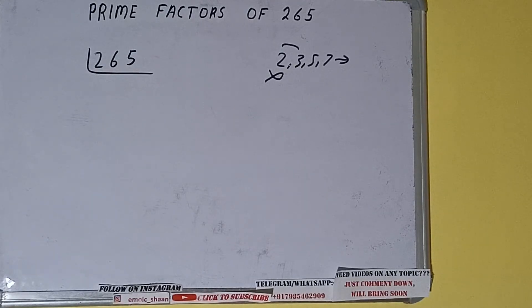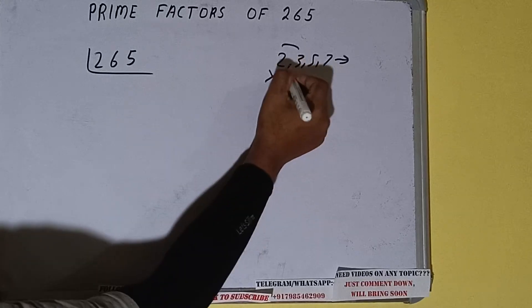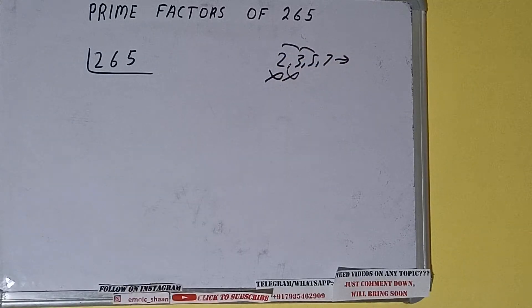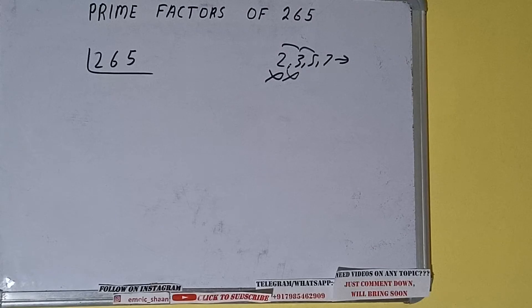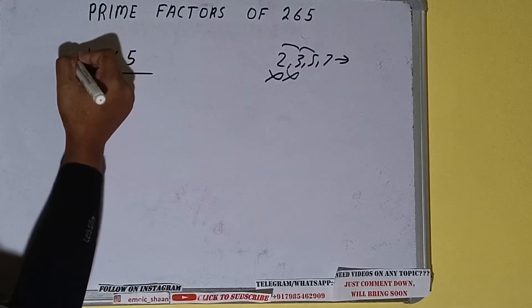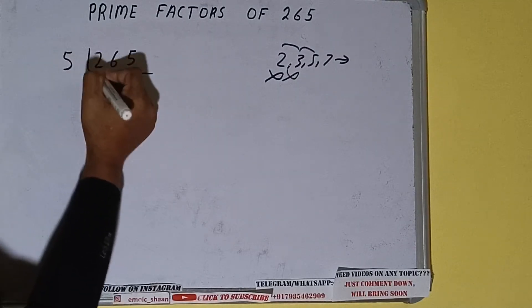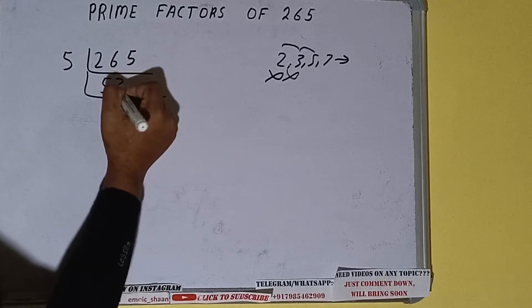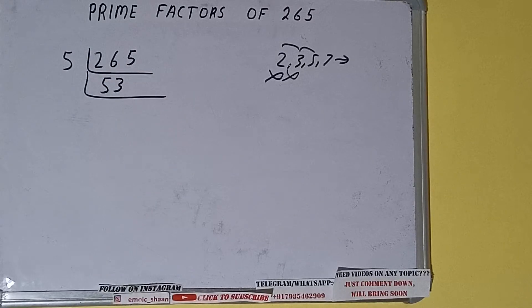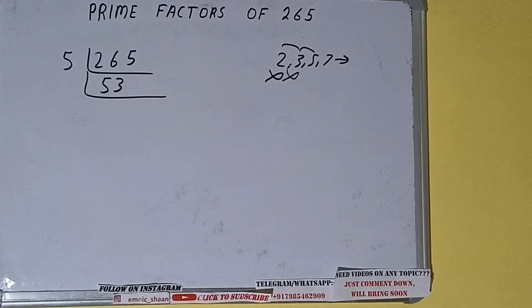So we'll go to the next lowest prime number, that is 5. The last digit is 5, so yes, it is divisible by 5. So divide it: 5 goes into 265 — 5 × 5 is 25, 5 × 15 is 155 — giving us 53.